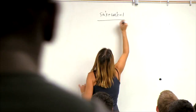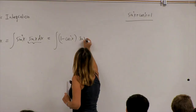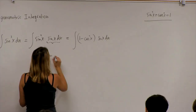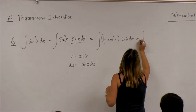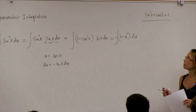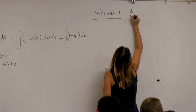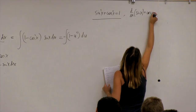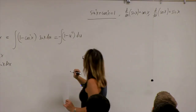Sine squared is easily expressible in terms of cosine, and here I have sine x dx. So substitution is obvious: u equals cosine x, and du is minus sine x dx. In this case, this integral can be expressed as minus the integral of 1 minus u squared du. What I used here is that the derivative of cosine x is negative sine x.